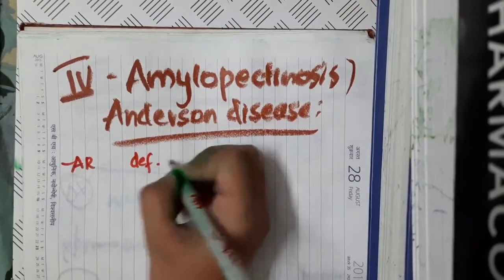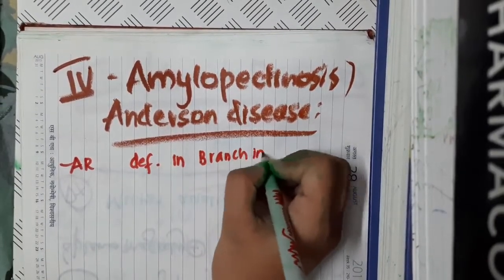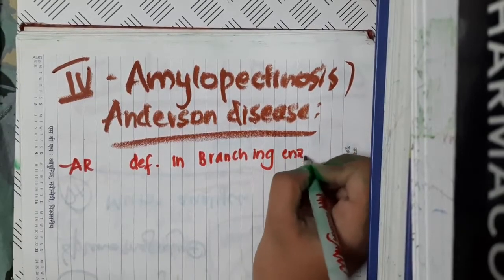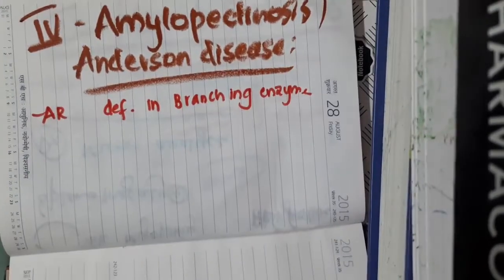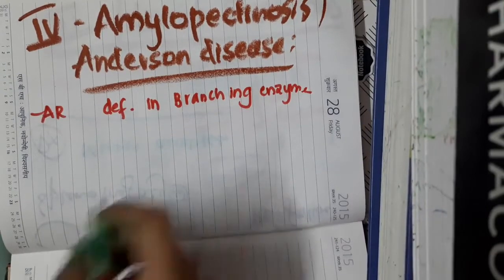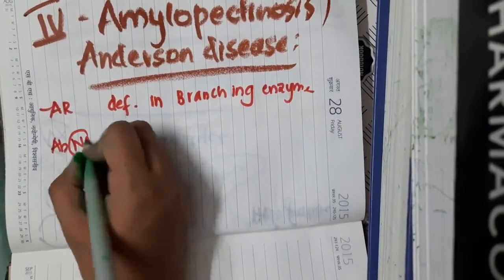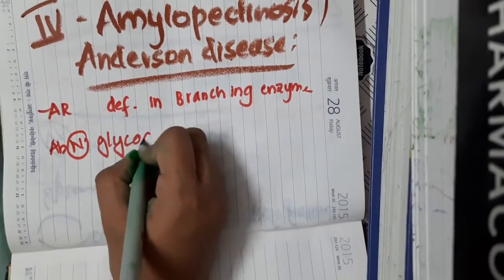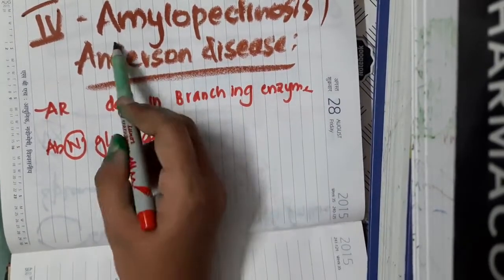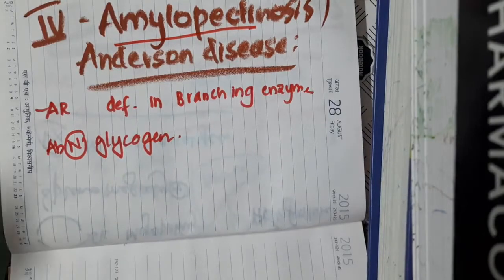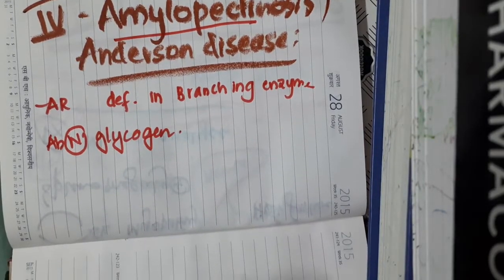The defect is in the branching enzyme. Because the defect is in the branching enzyme, there is accumulation of abnormal glycogen. This abnormal glycogen resembles amylopectin, and that is the reason why we call it amylopectinosis.